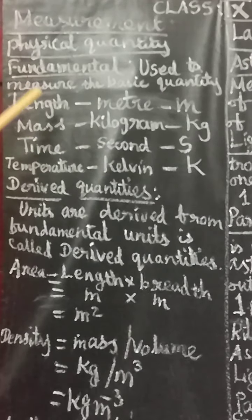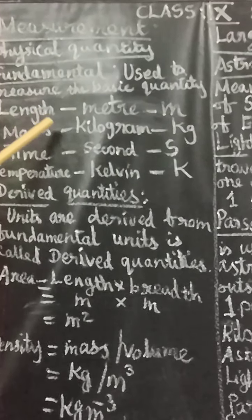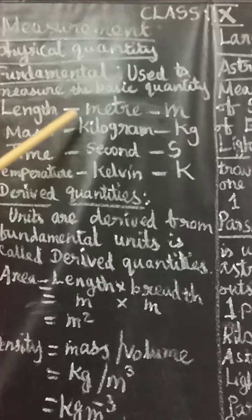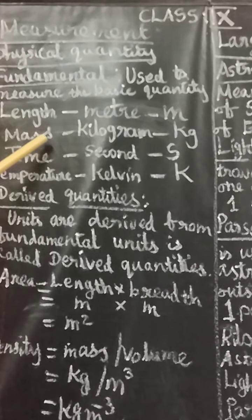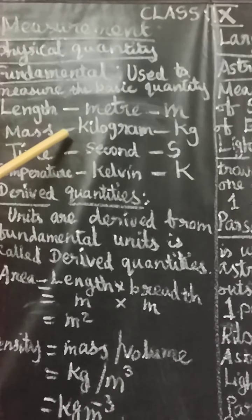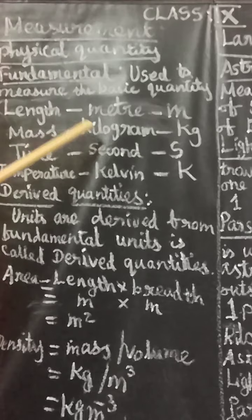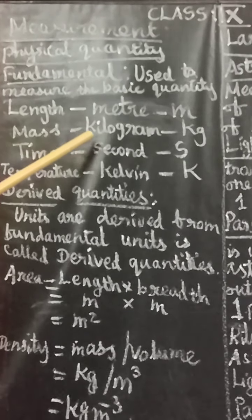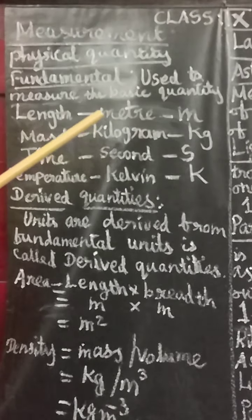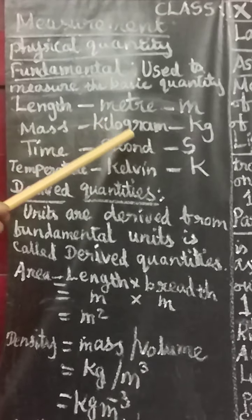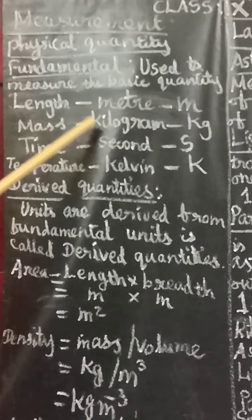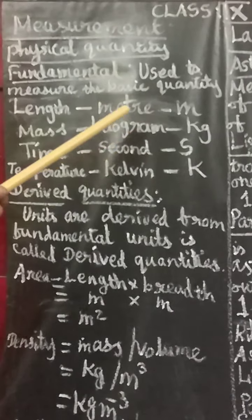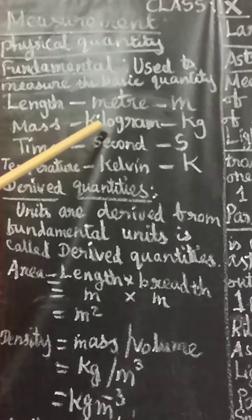The second fundamental quantity is mass. You use mass to find out the quantity of a substance or solid object. The unit of mass is kilogram — for example, 5 kilogram or 10 kilogram. A numerical value joined with a unit is called a fundamental quantity.